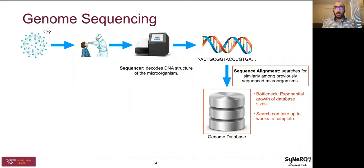For example, sequence alignment running against a very large database on a single computer could take up to a month. For this reason, computer science researchers have long focused on designing parallel and distributed sequence alignment tools to overcome this bottleneck.